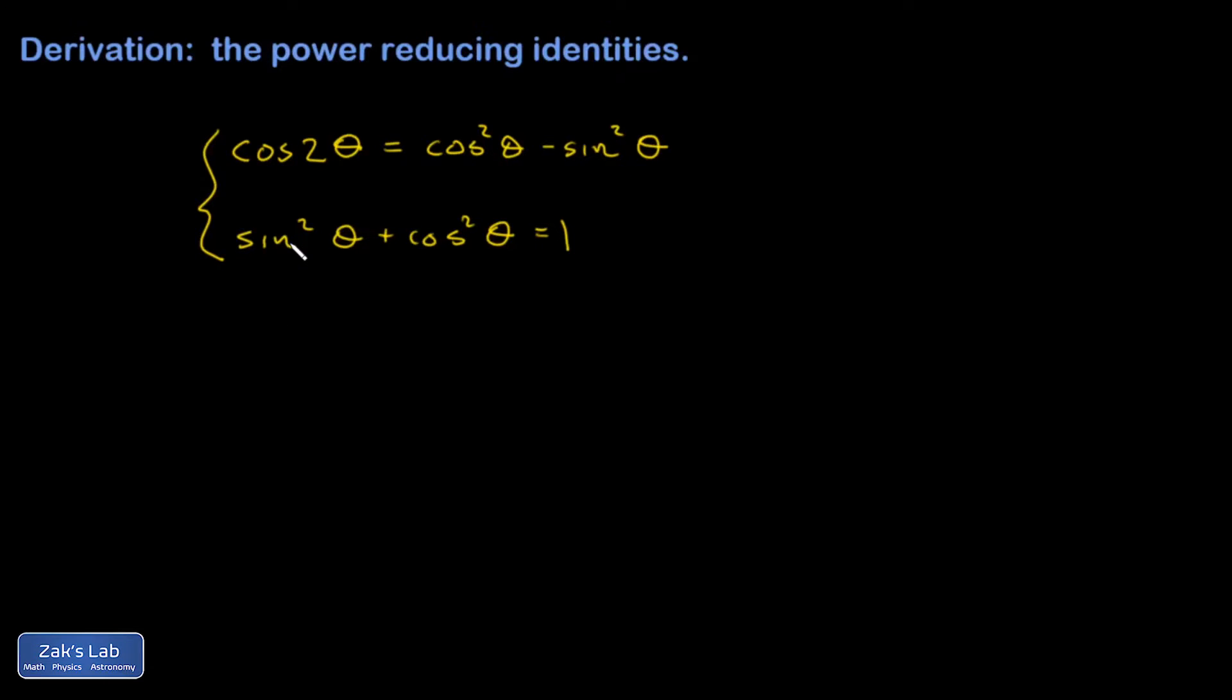The one on bottom is the first Pythagorean identity, which is based on visualizing a right triangle on the unit circle where we defined cosine as the x-coordinate of a point on the unit circle and sine as the y-coordinate.